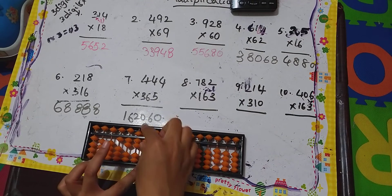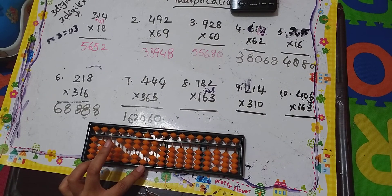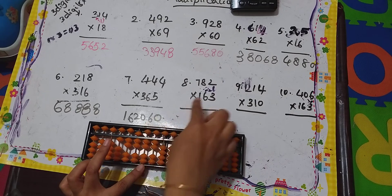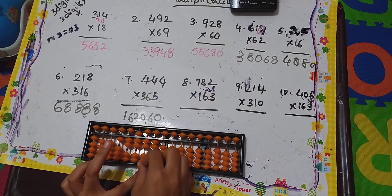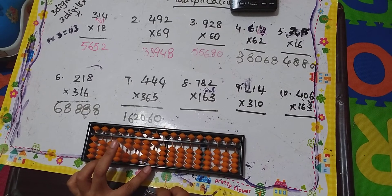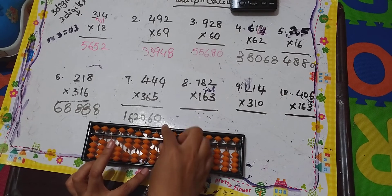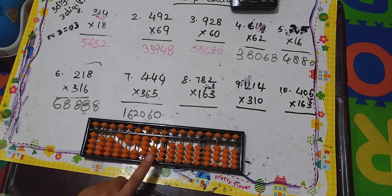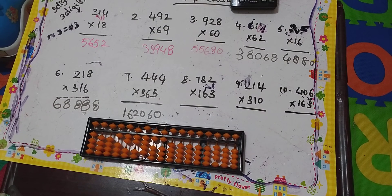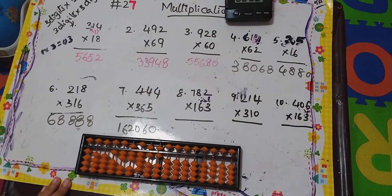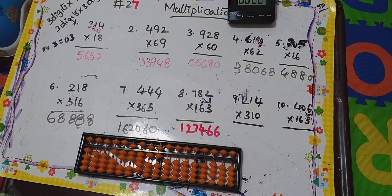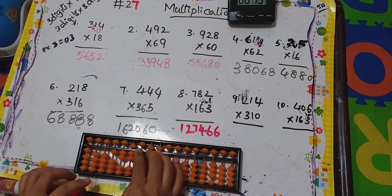3 eights are 24 — 2 and 4 done. Next, 3 twos are 06 — done. So the answer is 1, 2, 7, 4, 6, 6 — one hundred and twenty-seven thousand, four hundred and sixty-six. A very big one! So next let's do the next problem.